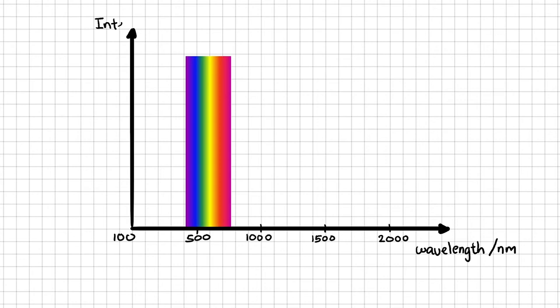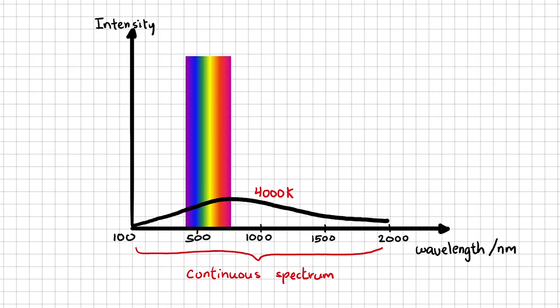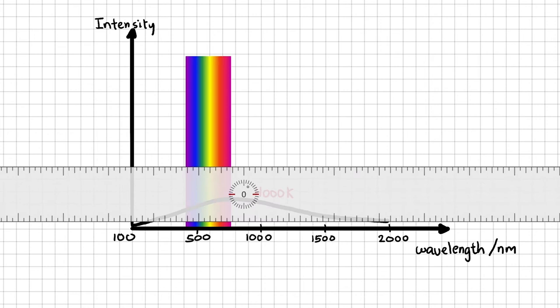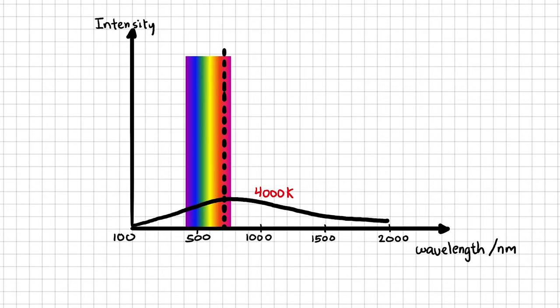Take a star, for example, that has a surface temperature of 4000 Kelvin. It emits radiation with all of these wavelengths, ranging from infrared to visible light to ultraviolet. But you can see that the peak intensity is around 700 nanometers in the red region of the visible light spectrum.